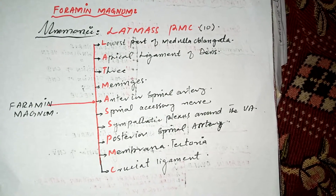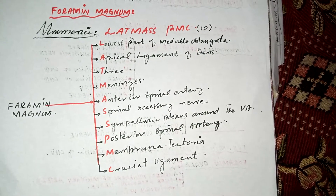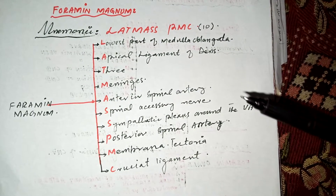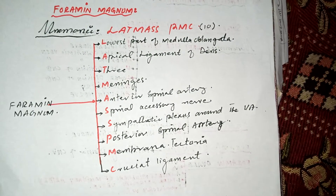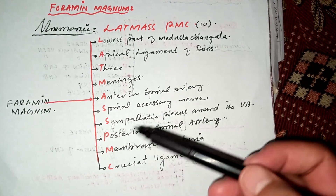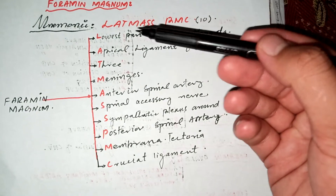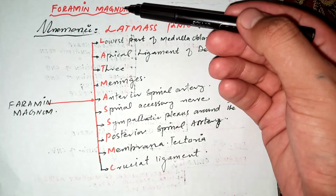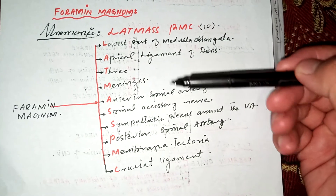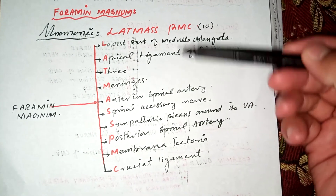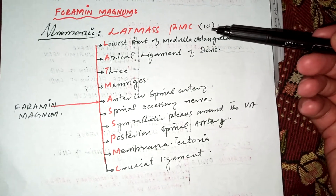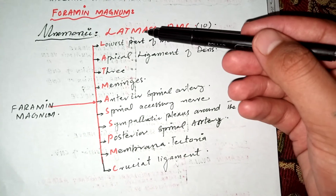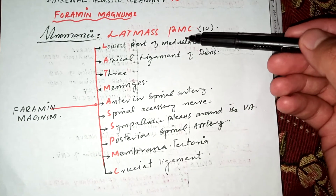We know that there are three fossae in the skull: the anterior cranial fossa, the middle cranial fossa, and the posterior cranial fossa. We start with the foramina present in the posterior cranial fossa. The largest foramina is the foramen magnum, and ten structures pass through it. We have the mnemonic 'LATMS PMC' for memorizing these structures.